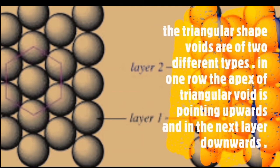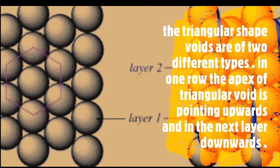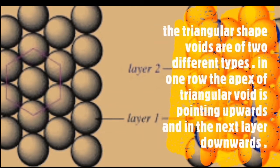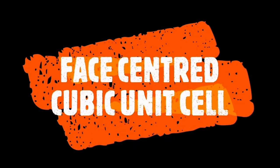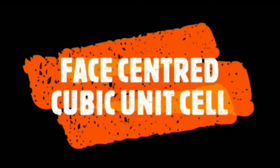The triangular-shaped voids are of two different types. The one in the row apex of the triangular void is pointing upwards and in the next layer: face-centered cubic unit cell.